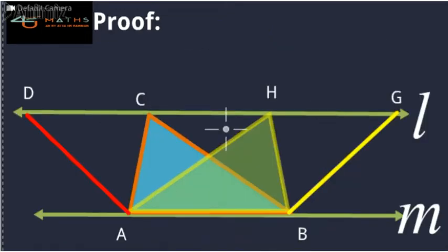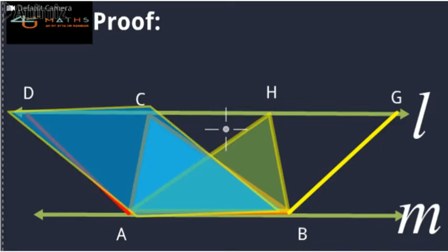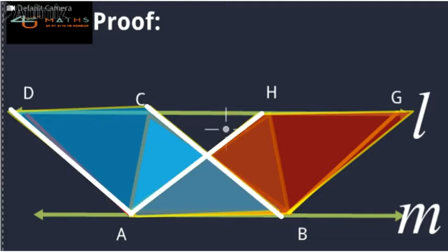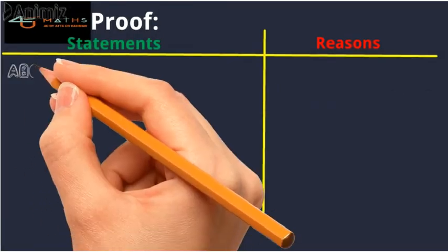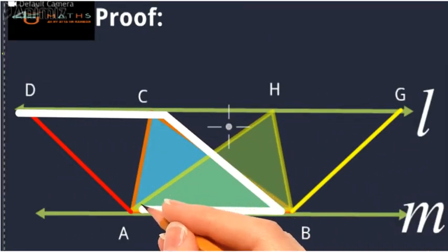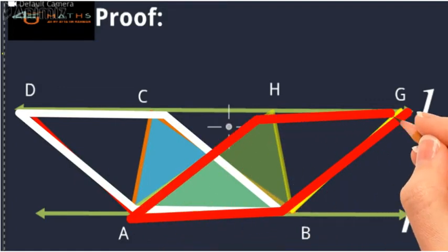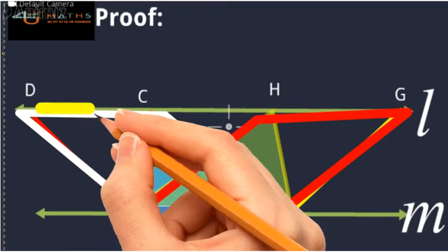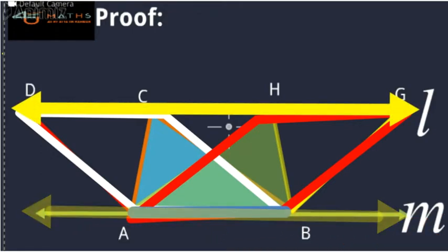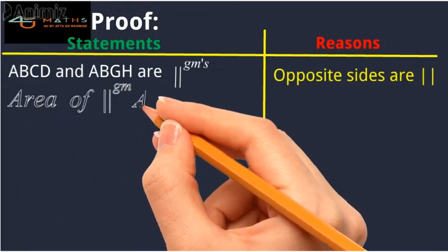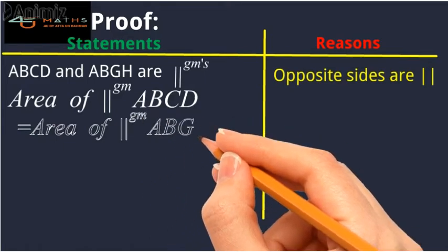From the figure, ABCD and ABGH are parallelograms because their opposite sides are parallel, as mentioned in the construction. Since both parallelograms ABCD and ABGH have the same base AB and both lie between the same parallel lines, we can say that they have the same area.